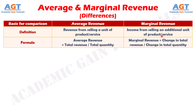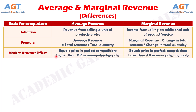Number two: average revenue is calculated by dividing total revenue by total quantity, while marginal revenue is calculated by dividing the change in total revenue by the change in total quantity. Number three: the market structure influences the average revenue of a firm, and in a perfectly competitive market, the average revenue is equal to the price of a product and the marginal revenue. On the other hand, in a monopolistic or oligopolistic market, the average revenue is higher than the marginal revenue.